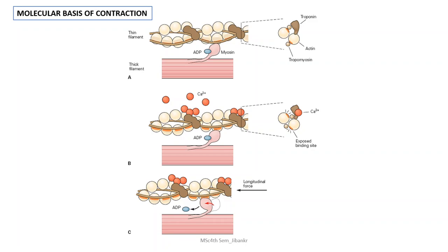The muscle contraction process starts with the increase of calcium ions in the cytosol. This calcium binds to troponin C, and because of this binding there is a change in the conformation of the whole troponin complex. Because of this conformational change, its relative interaction with other components of the thin filament also changes — so the tropomyosin which was blocking the myosin binding site on the actin is now exposed.